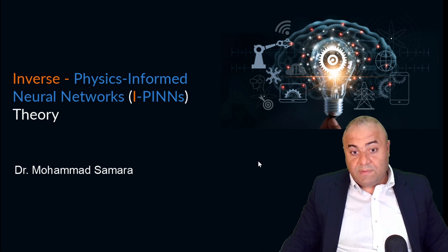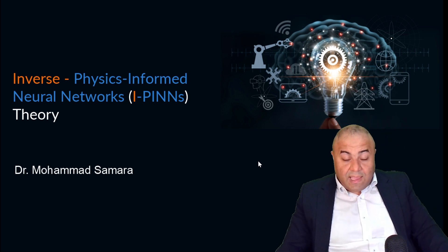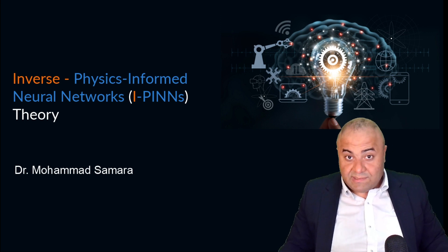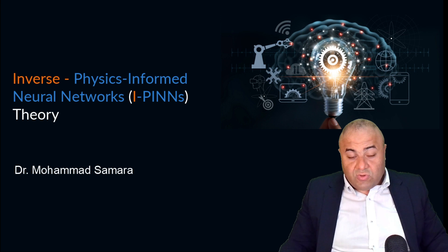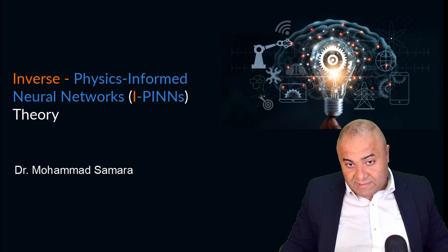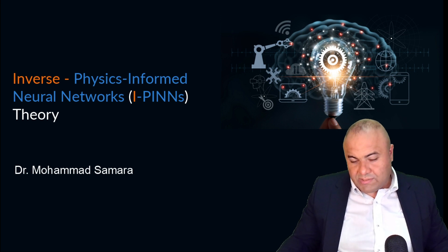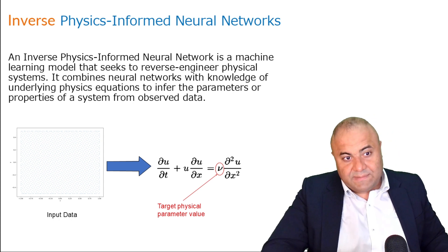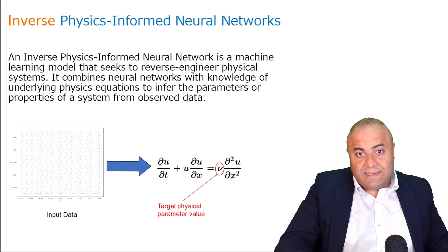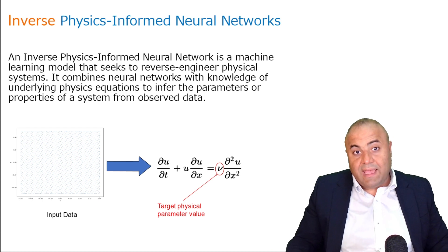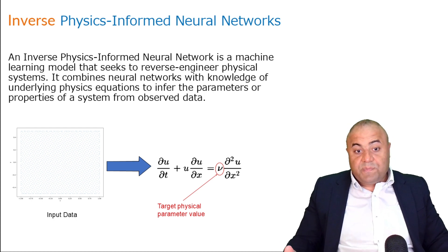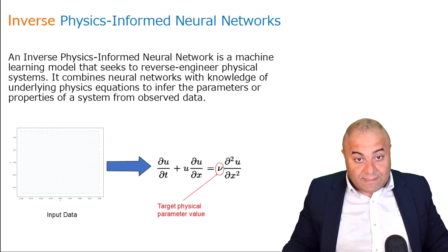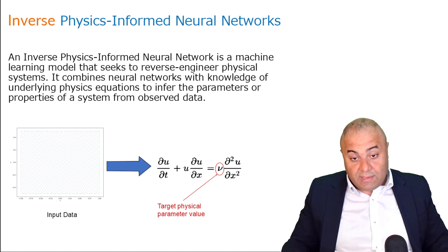Inverse physics-informed neural networks (iPINNs) is a type of neural network that uses physics to predict a specific parameter. iPINNs is basically a neural network that can be used to predict a specific parameter with the help of physics, and data is a necessary requirement.